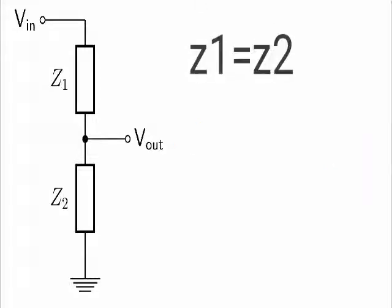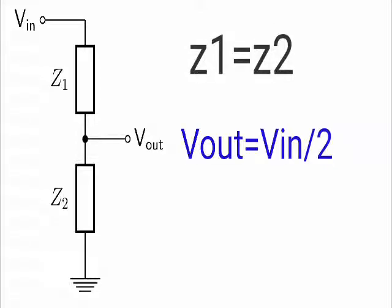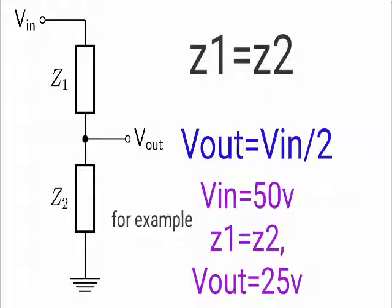Z1 and Z2 are the same value. Now we divide the voltage into V2 and divide the voltage by 2.